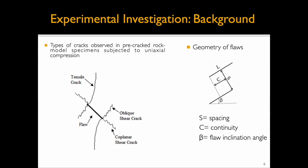Two types of cracks are commonly observed in pre-cracked rock model specimens subjected to axial compression: tensile and shear cracks. Tensile cracks usually propagate in a stable manner, following a curvilinear path that aligns with the most compressive loading direction, and their surfaces are clean. Shear cracks, on the other hand, are characterized by the presence of crushed material and powder on their surfaces. Shear cracks may be classified as coplanar or oblique. Coplanar cracks make an angle of 45 degrees or less with the flaw plane, while oblique shear cracks make an angle higher than 45 degrees. Cracking processes and coalescence patterns are closely related to the geometry of pre-existing discontinuities, which I'll be referring to as flaws in this presentation.